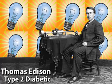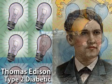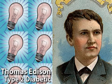Type 2 diabetes is by far the most common, making up 90 to 95% of new cases of diabetes. Thomas Edison may be best known for inventing the light bulb, but the Wizard of Menlo Park was also a member of the large type 2 diabetic population.